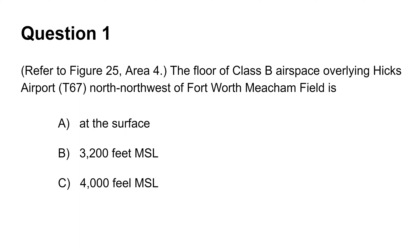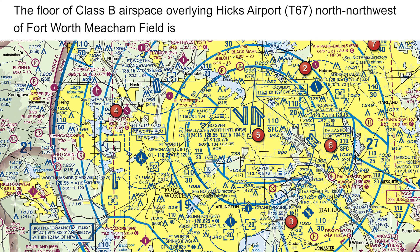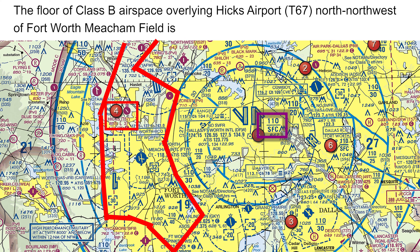The first question asks you to identify the floor of the Class B airspace overlying Hicks Airport, north-northwest of the Fort Worth-Meacham field. First locate the airport in Area 4 and identify the boundaries of the Class B airspace that overlies Hicks Airport. The Class B airspace typically has the floor and ceiling denoted by one number over a second number in hundreds of feet above mean sea level or MSL. Sometimes the floor is denoted by the letters SFC, meaning it starts at the surface. In this case the floor is 4000 feet MSL, thus the answer is choice C.